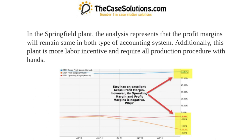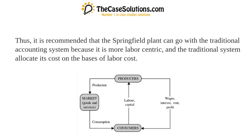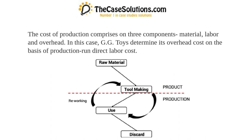In the Springfield plant, analysis shows that profit margins remain the same under both accounting systems. This plant is more labor-intensive and requires all production procedures to be done by hand. It produces only one product — cradles — and all related components are purchased from local manufacturers. Therefore, the Springfield plant can continue with the traditional accounting system, as it is more labor-centric and costs are allocated on the basis of labor cost.